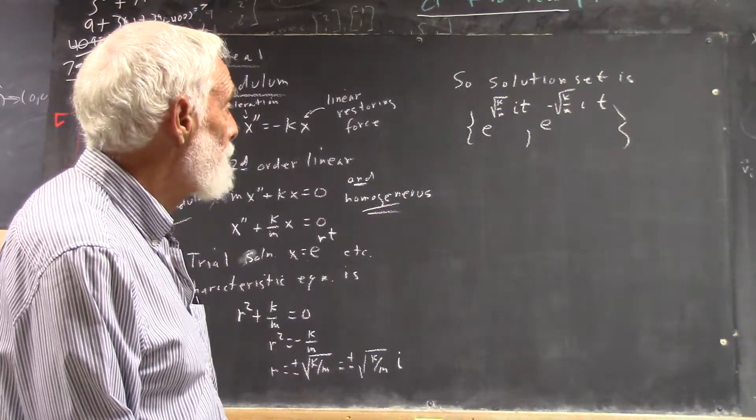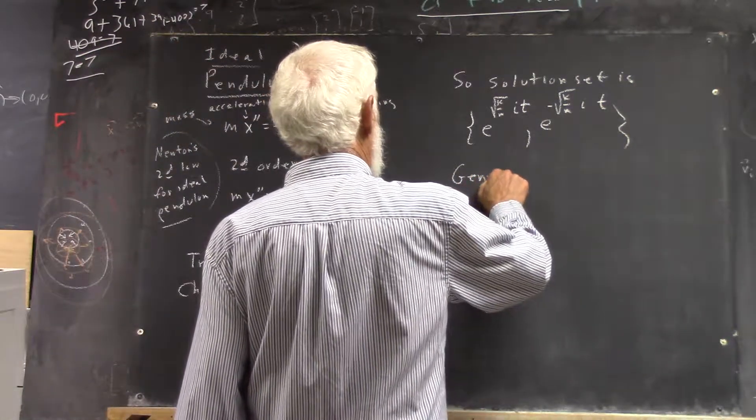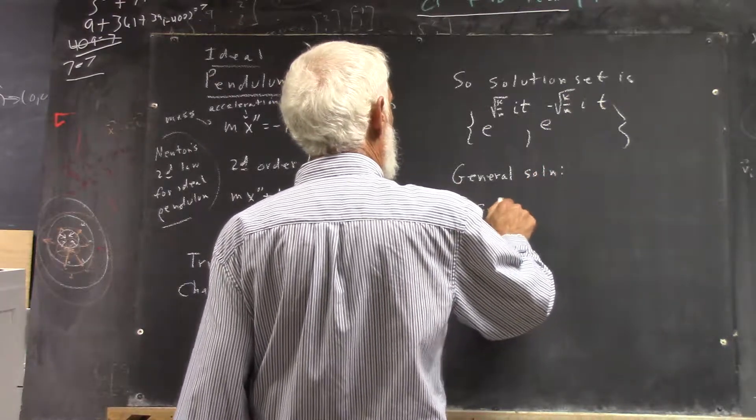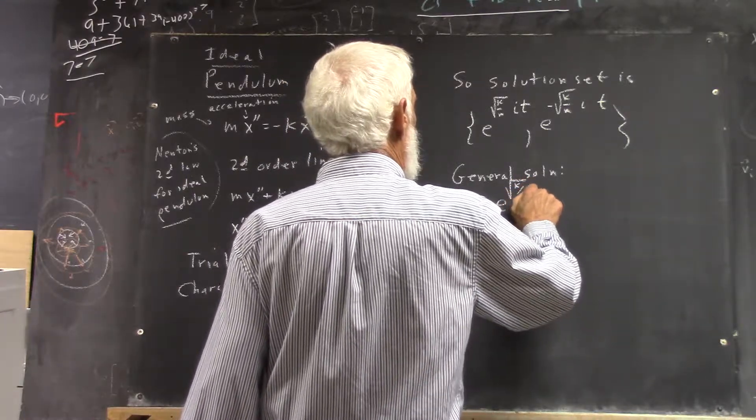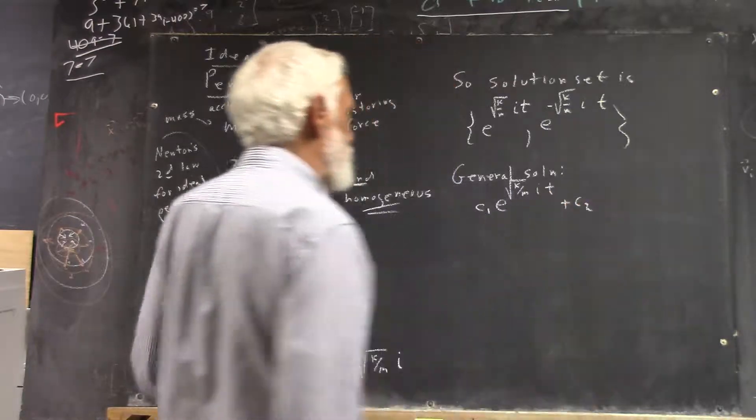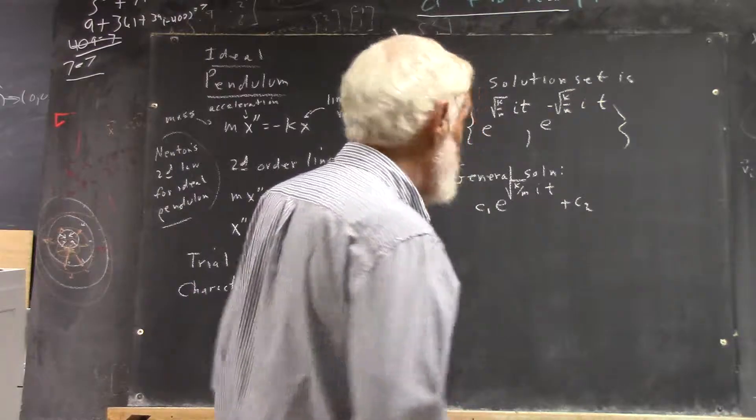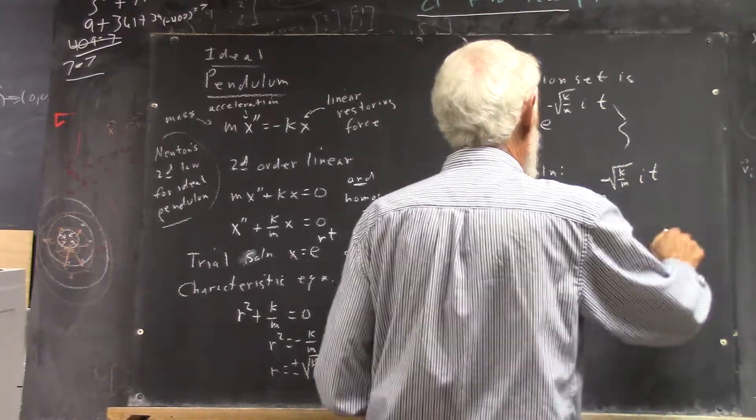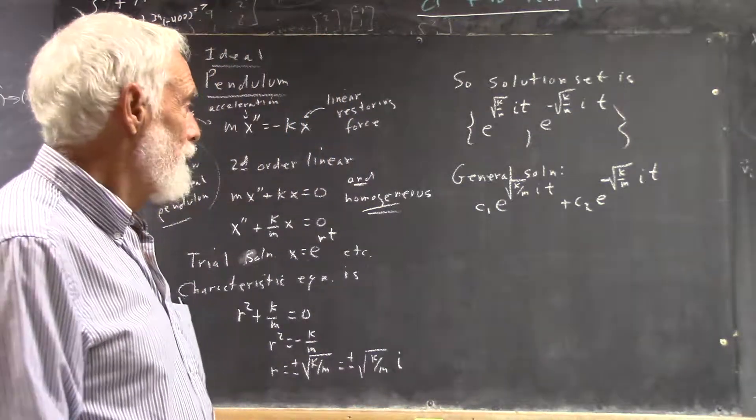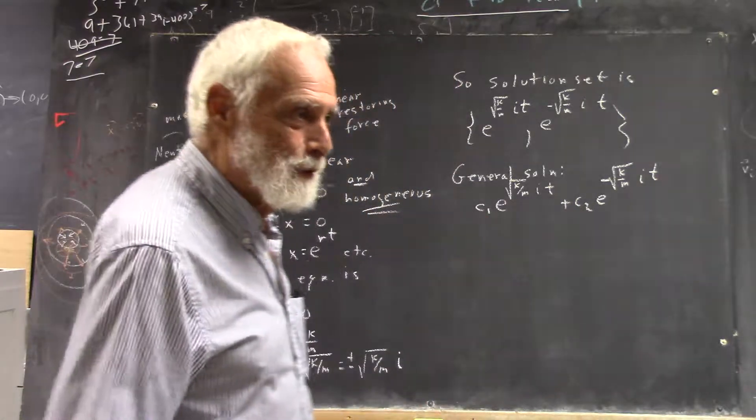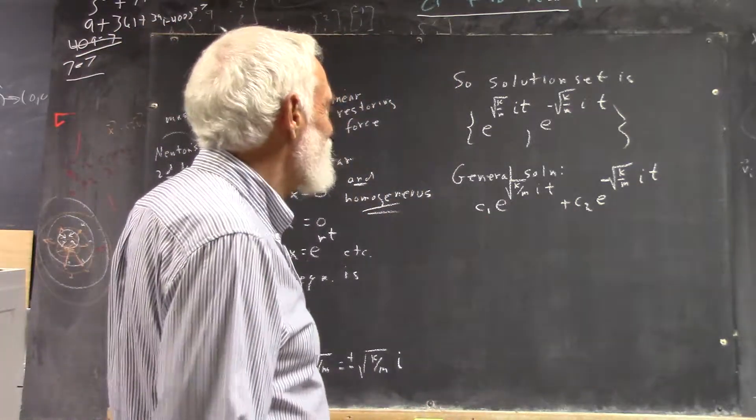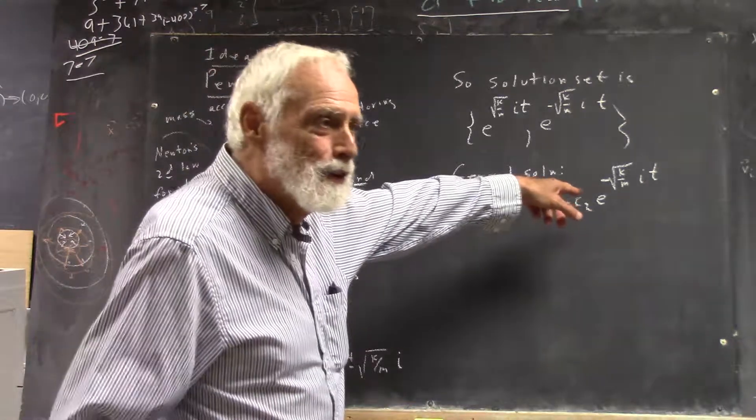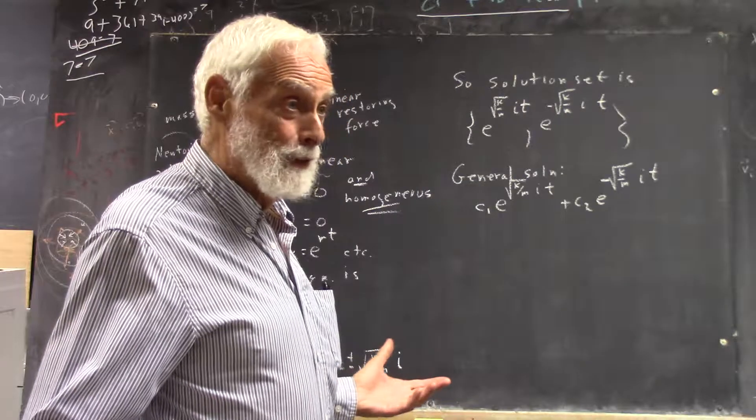So, your solution set is e to the square root of k over m i t, e to the negative square root of k over m i t. Okay? General solution. Now we're not at MIT, but still, they're doing the same thing right now. Here, I'm not sure what they're doing in their course right now. Probably winning Nobel Prizes. So, everything makes sense so far? It should.